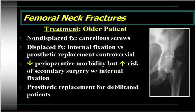In summary: in an older patient with a non-displaced fracture, treat with parallel cancellous screws. If displaced, doing a closed reduction and proceeding with internal fixation versus proceeding with prosthetic replacement is somewhat controversial. If you do internal fixation, the literature supports less perioperative morbidity — smaller incisions, shorter surgery, less anesthetic time, less blood loss. However, there is clearly an increased risk of secondary surgery being required. For a truly debilitated patient, there is really no indication for internal fixation and those patients should have prosthetic replacement of the proximal femur.